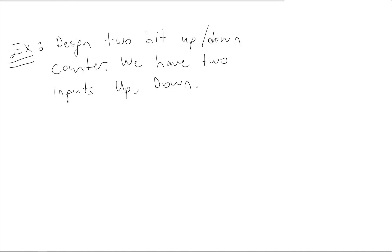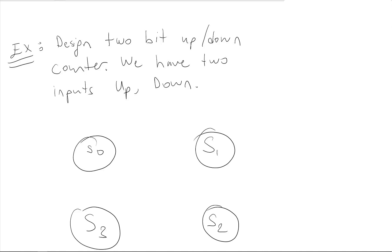In this video we will design a 2-bit up or down counter. We have two inputs: up and down. If the up signal is 1, we will be counting up, and if the down signal is 1, we will be counting down.